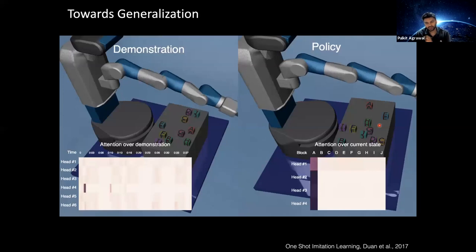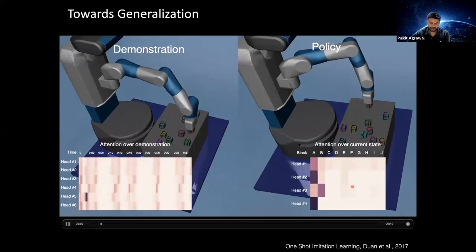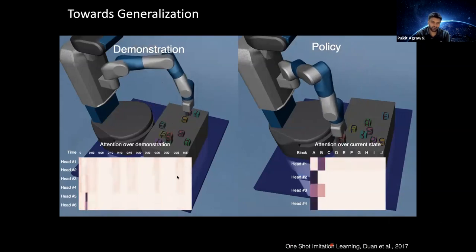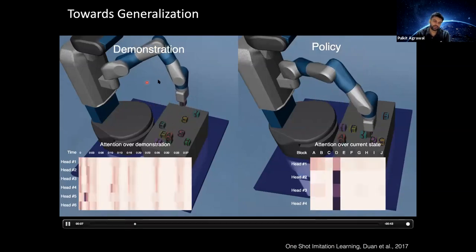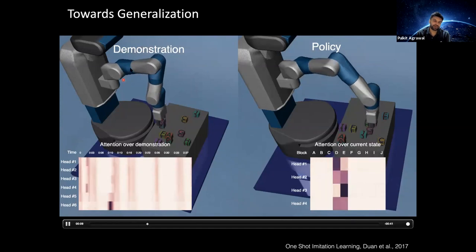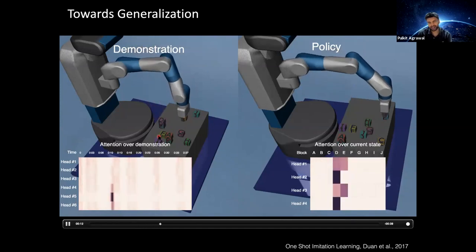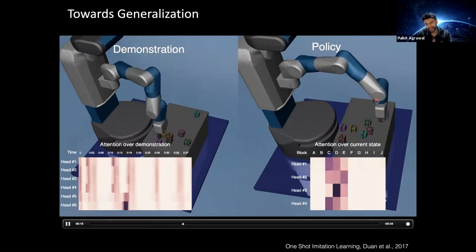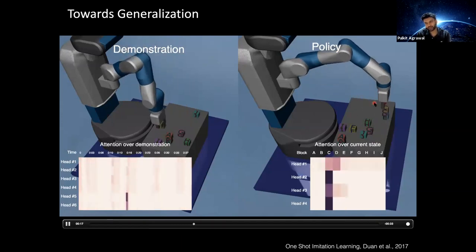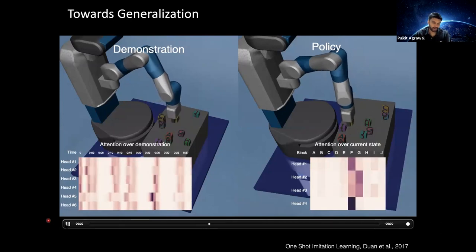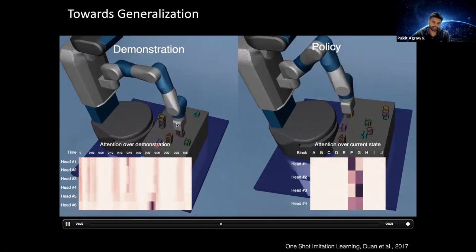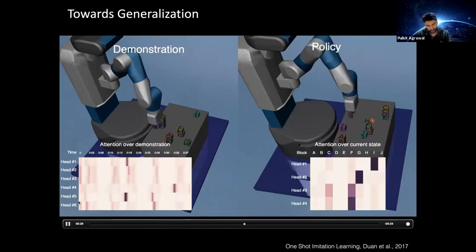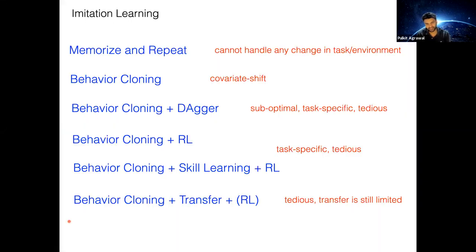This work is called one-shot imitation learning. 'One shot' means I give you one demonstration of how to do a task, then change the environment setup, and still want you to perform it — not hundreds of demonstrations, just one.